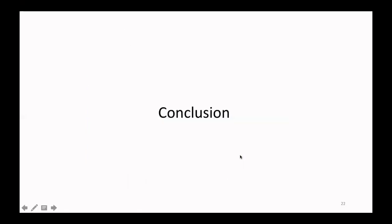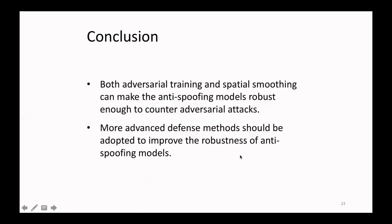In conclusion, both adversarial training and spatial smoothing can make the anti-spoofing models robust enough to counter adversarial attacks. I think more defense methods should be adopted to improve the robustness of anti-spoofing models. That's all I have — thanks for listening.